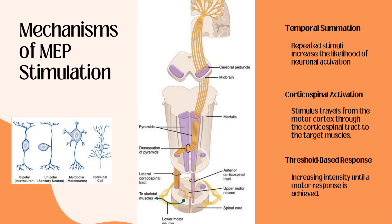MEP relies on many mechanisms, one of which is temporal stimulation, in which repeated pulses are delivered in order to increase neural excitability by increasing the likelihood of neuronal activation. Within MEP, the corticospinal tract is the primary pathway that is studied. Cortical neurons, depicted on the left, are nerve cells located in the cerebral cortex, responsible for processing and transmitting information throughout the brain and nervous system. The most relevant cortical neurons are pyramidal neurons, particularly those found in layer 5 of the motor cortex. Excitatory neurons are responsible for projecting to the brain stem, the spinal cord, and other cortical areas. MEP stimulation targets these neurons to activate motor pathways.